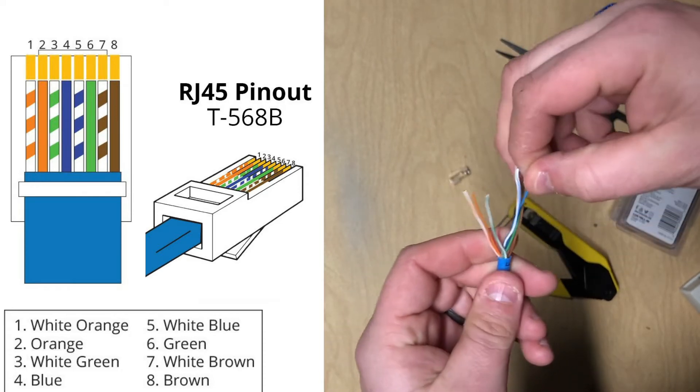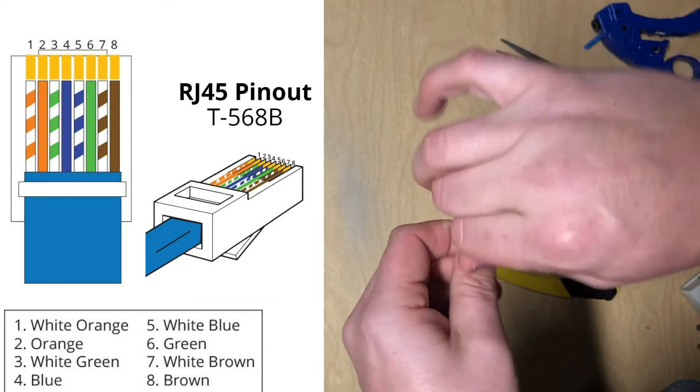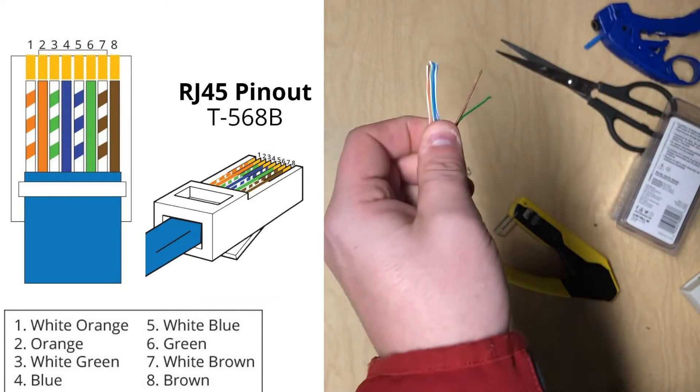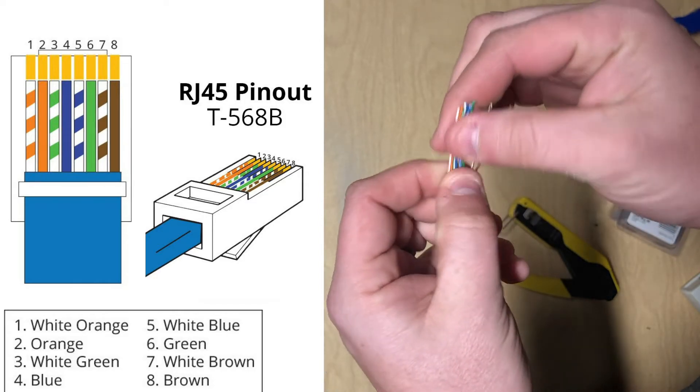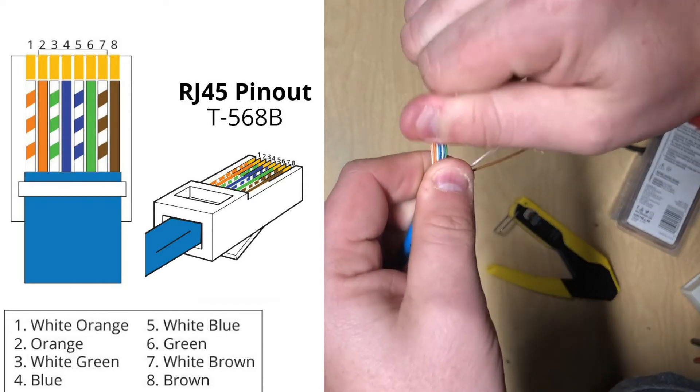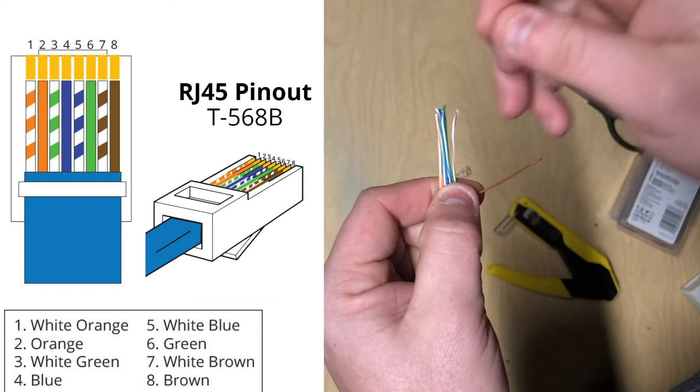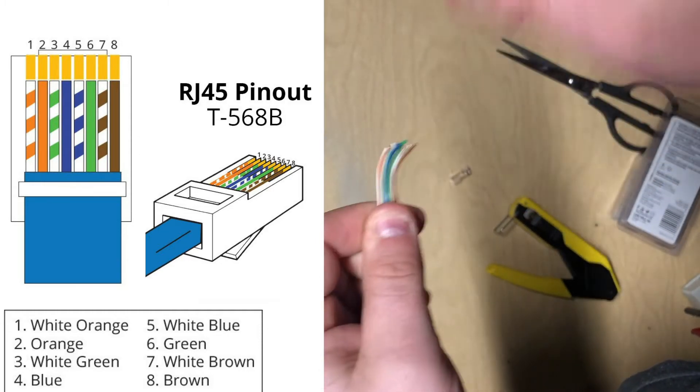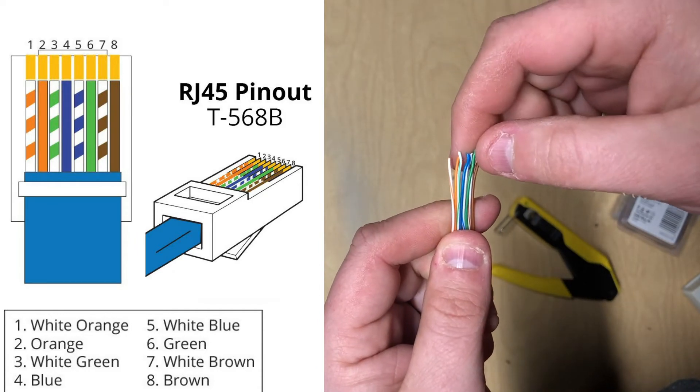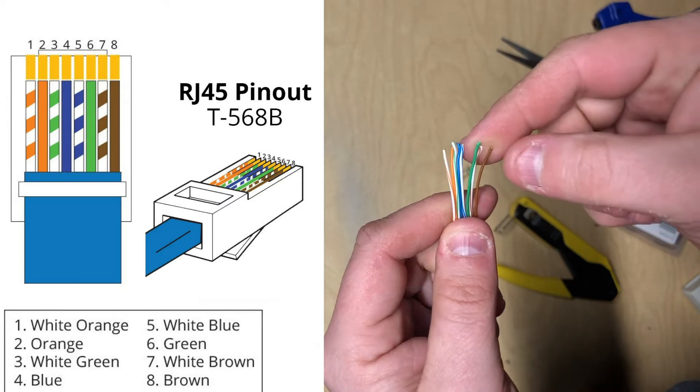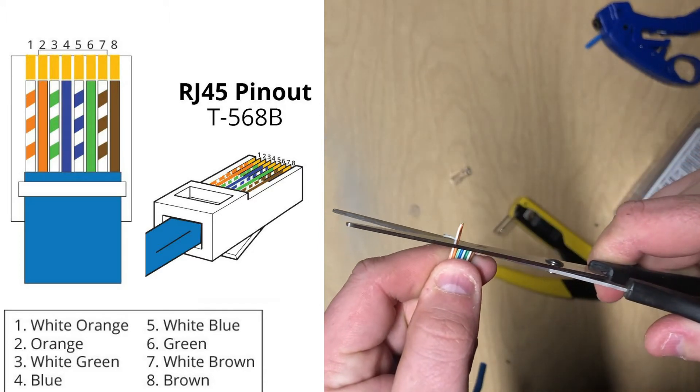As you're doing this, just keep pulling them together because it's a weird order. Then you do blue solid, then blue white. You're just making these things go straight as you're doing it. Then you get green in there. Again, this is not the perfect order—if you've never done this before, this may seem really strange why the color order is as strange as it is. Then you do brown white and then brown. Typically once I have all of these, I double check: orange white, orange, green white, blue, blue white, green, brown white, brown. Then I just try to clean it up a little bit, so you take a little bit off.